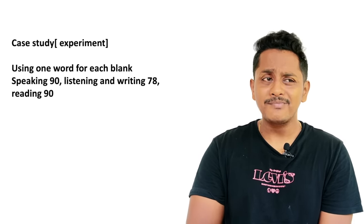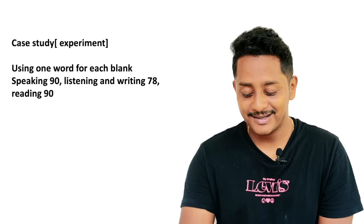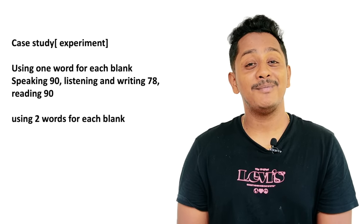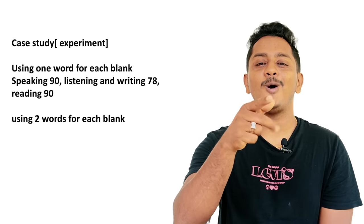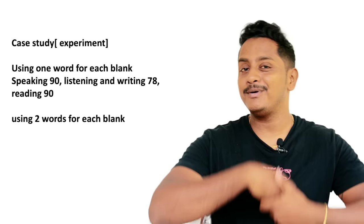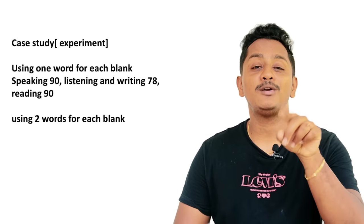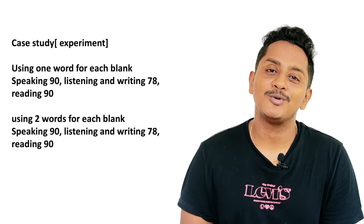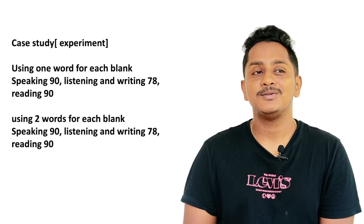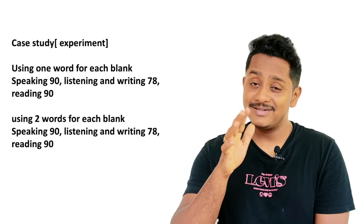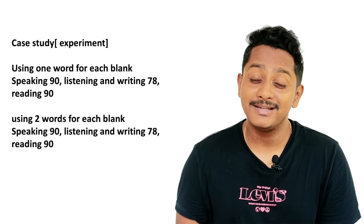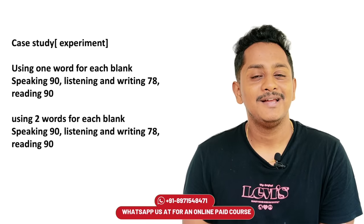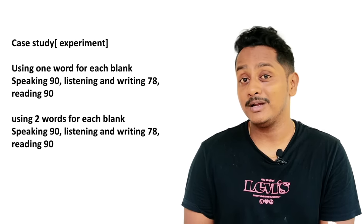With that setup, the score we got was: Speaking 90, Listening and Writing around 78-79, and Reading 19. This told us that using just one word per blank is probably one of the reasons scores stay low. The experiment didn't stop there — we then tried two words per blank, like 'government, jungle' separated by commas. But the grammar in Summarize Spoken Text becomes completely messed up with that approach, and the score remained almost the same.